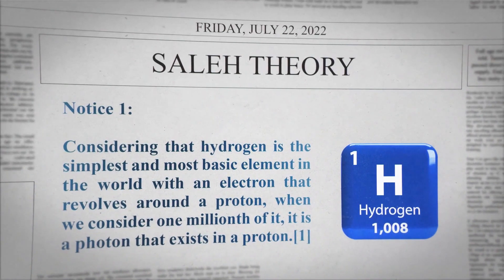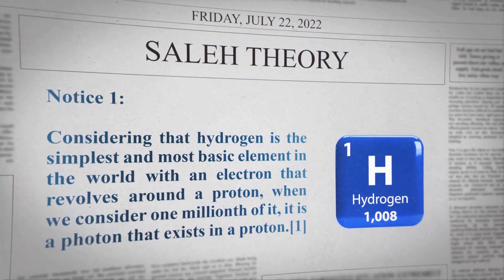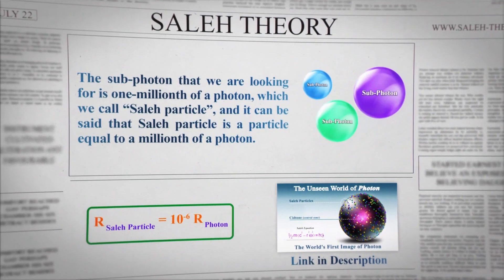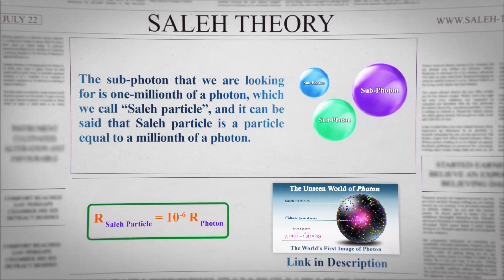Notice 1. Considering that hydrogen is the simplest and most basic element in the world, with an electron that revolves around a proton — when we consider one-millionth of it, it is a photon that exists in a proton. The sub-photon that we are looking for is one-millionth of a photon, which we call a solid particle. It can be said that the solid particle is a particle equal to one-millionth of a photon.